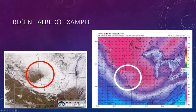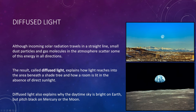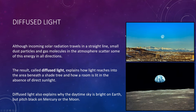Although incoming solar radiation travels in a straight line, small dust particles and gas molecules in the atmosphere scatter some of this energy in all directions. The result, called diffuse light, explains how light reaches beneath the shade of a tree and how a room is lit in the absence of direct sunlight. Scattering also accounts for the brightness and even the blue color of the daytime sky. In contrast, bodies such as the Moon and Mercury, which are without atmospheres, have dark skies and pitch black shadows even during daylight hours. About half of the solar radiation absorbed at Earth's surface arrives as diffuse or scattered light.